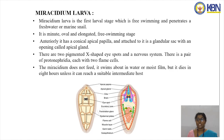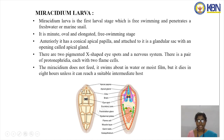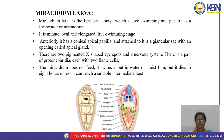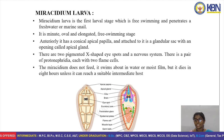In the life cycle of Fasciola hepatica, it undergoes different larval stages. The first larval stage is the miracidium larva. It is a free-living, minute, oval, and elongated free-swimming stage. Anteriorly it has a conical apical papilla attached to a glandular sac with an apical gland opening. There are two pigmented X-shaped eyespots and a nervous system, and a pair of protonephridia each with two flame cells. The miracidium doesn't feed; it swims in water or moist film but dies in eight hours unless it reaches a suitable intermediate host.